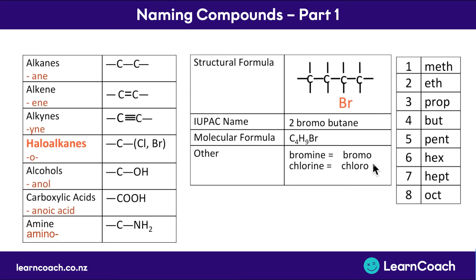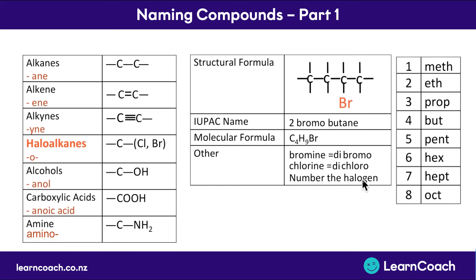In some advanced questions, a molecule might have two bromines or two chlorines attached. In that case you call it dibromo or dichloro. You also put both of their carbon numbers in front - so if attached to the second and third carbons, you'd call it 2,3-dibromobutane.